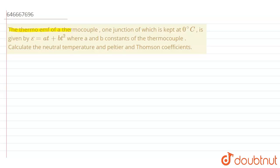The thermo emf of a thermocouple, one junction of which is kept at zero degree celsius, is given by e is equal to at plus bt squared, where a and b are constants of the thermocouple. Calculate the neutral temperature, Peltier, and Thomson coefficient.